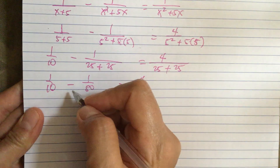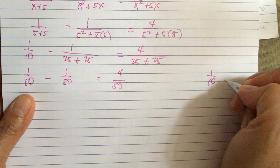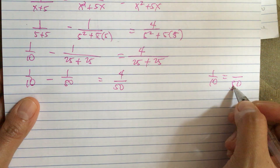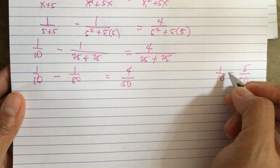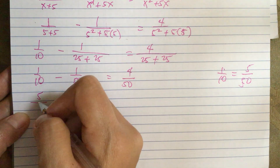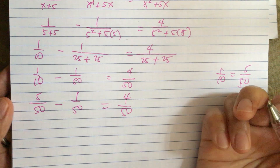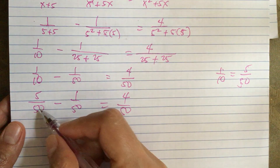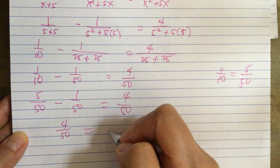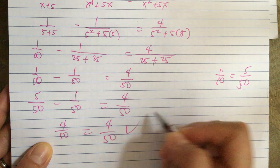The two fractions on the left don't have the same denominator, so we convert. The LCM of 10 and 50 is 50. Since 10 goes into 50 five times, 1 over 10 equals 5 over 50. So we have 5 over 50 minus 1 over 50 equals 4 over 50. Now they share the same denominator: 5 minus 1 equals 4, giving us 4 over 50.